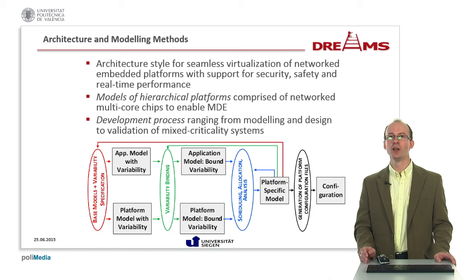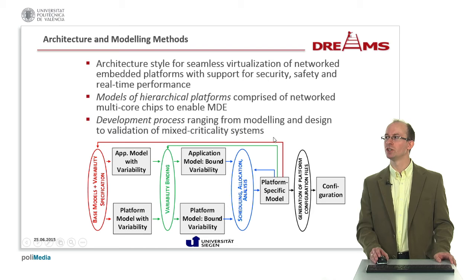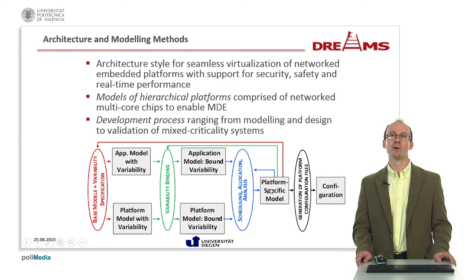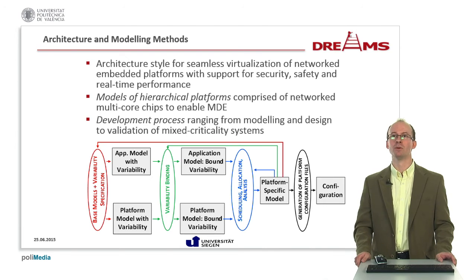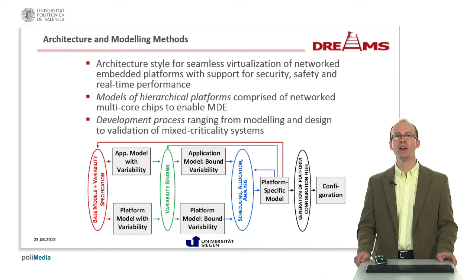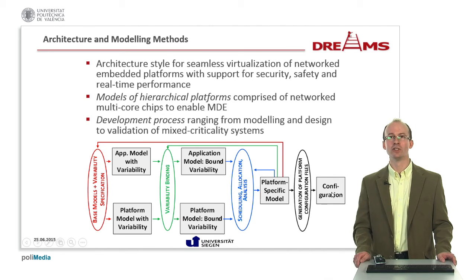After the variability binding has been determined, we make the scheduling and allocation decisions, which involves a search in the search space to find a feasible schedule meeting all timing and extra-functional requirements. This is captured in the platform-specific model. If no feasible solution exists, we need to backtrack — undoing the variability binding or modifying the application and platform models by, for example, providing more resources. Once a feasible platform-specific model is found, the endpoint is the configuration of the platform so the application can be deployed.